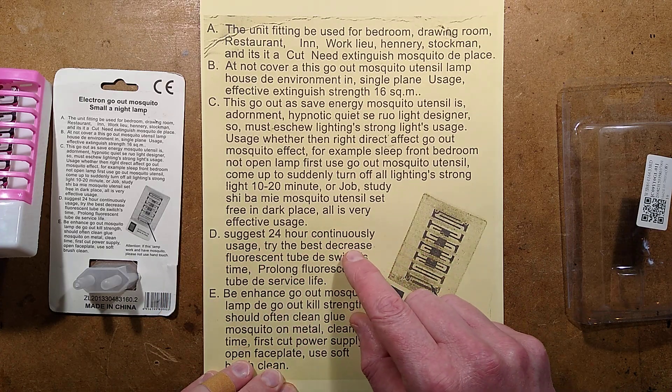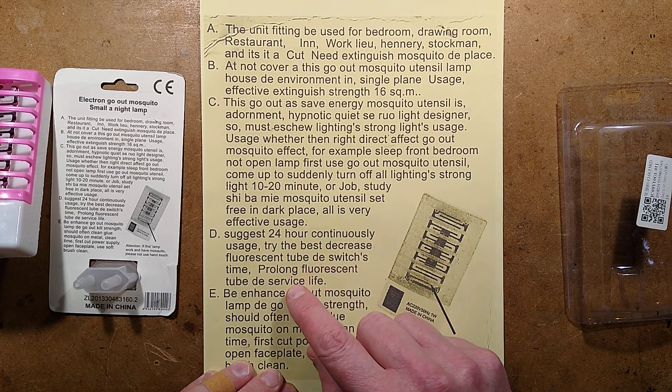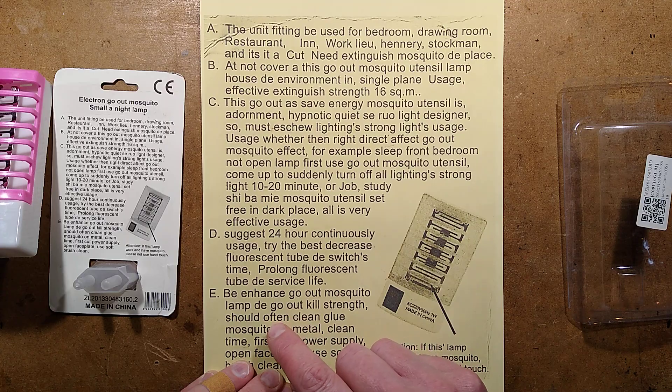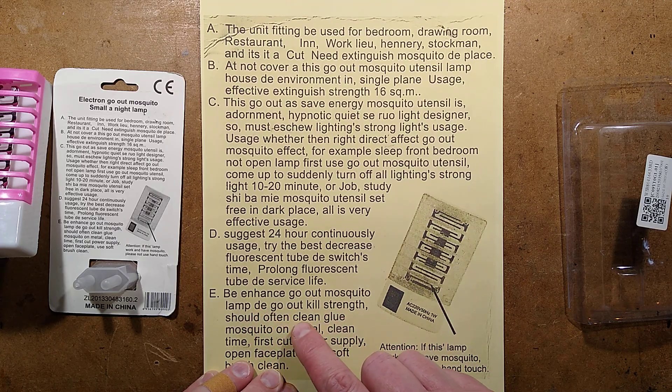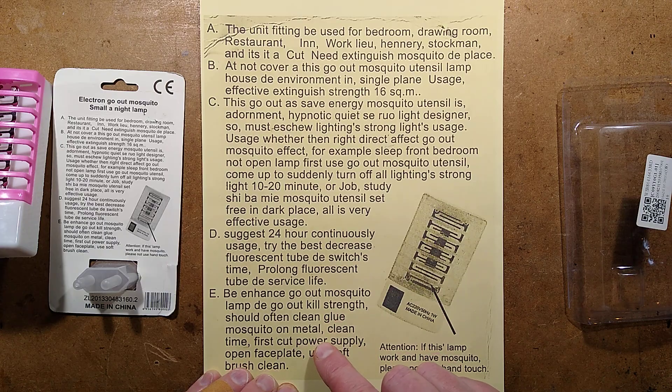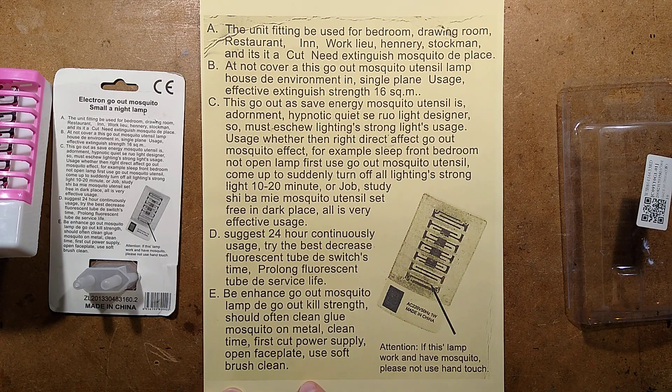Suggest 24-hour continuously usage, try the best, decrease fluorescent tube to switches time, prolong fluorescent tube to service life. Be an ants go-out mosquito lamp to go-out kill strength, should often clean glue mosquito on metal. Clean time, first cut power supply, open faceplate, use soft brush clean.